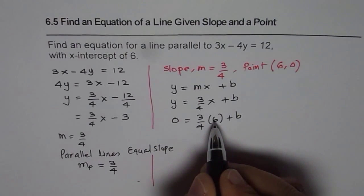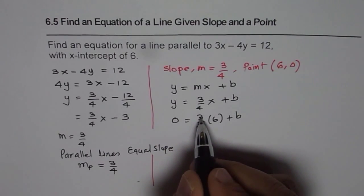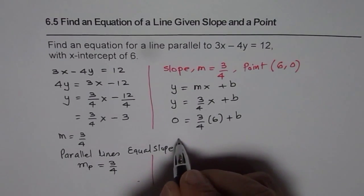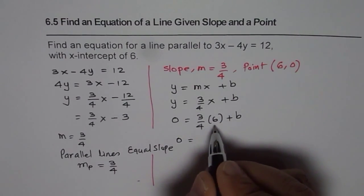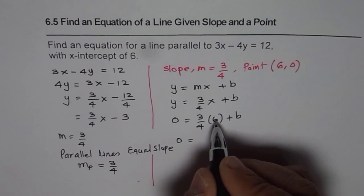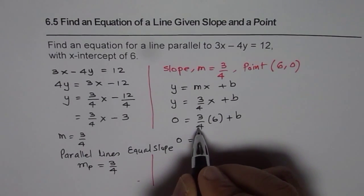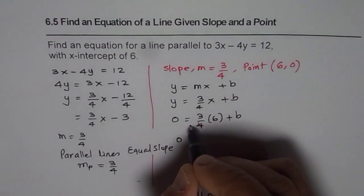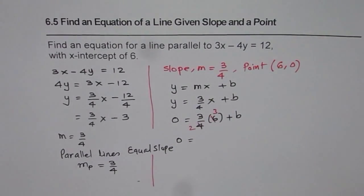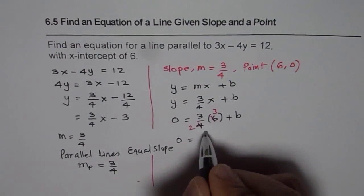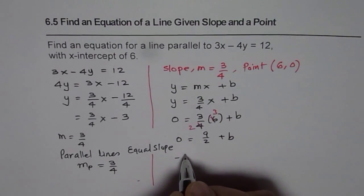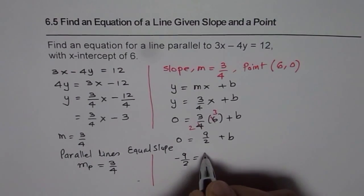So that is 6 times 3 is 18, and 18 divided by 4. So we could write this as, let me write this as, we can simplify this. So we can say 4, you can divide it by 2. Simplify it. So we get 9 over 2. So we get 9 over 2 plus b or minus 9 over 2 is equals to b.